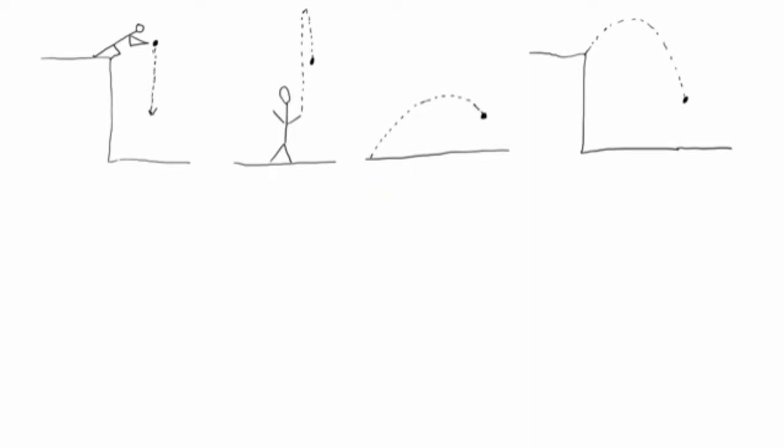For the first two examples where we just have vertical motion, the constant acceleration is the acceleration due to gravity, which is negative 9.81 meters per second squared if we consider the positive y direction to be up.